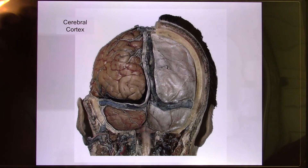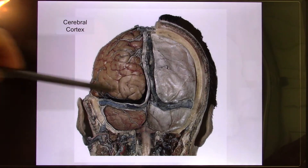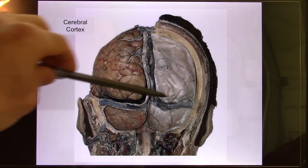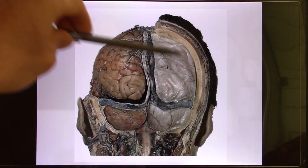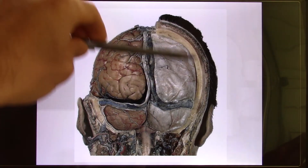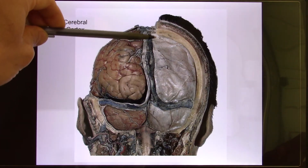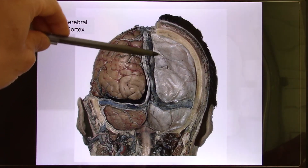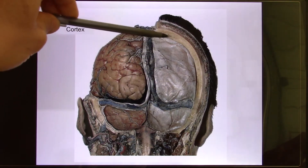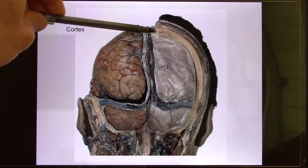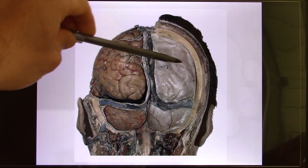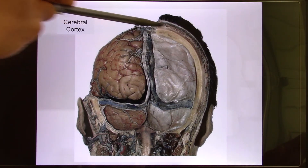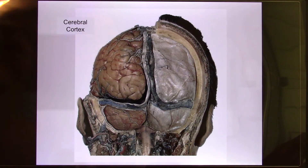Your brain — that's the human's brain — is covered by meninges. Meninges are three layers: pia, arachnoid, and dura — three layers positioned between your skull and your brain.